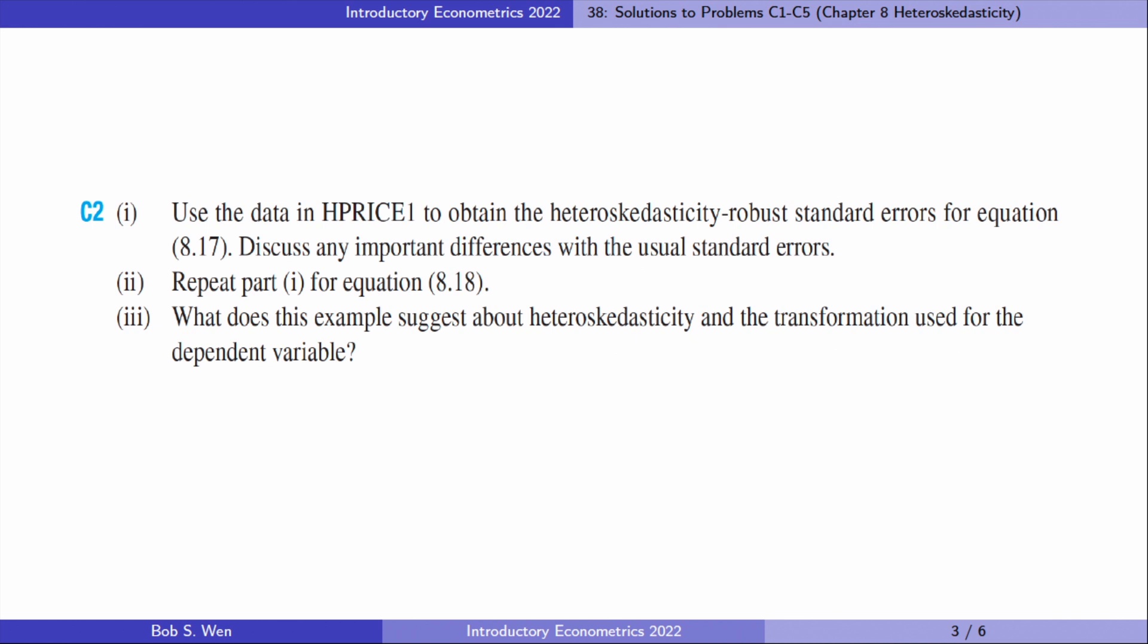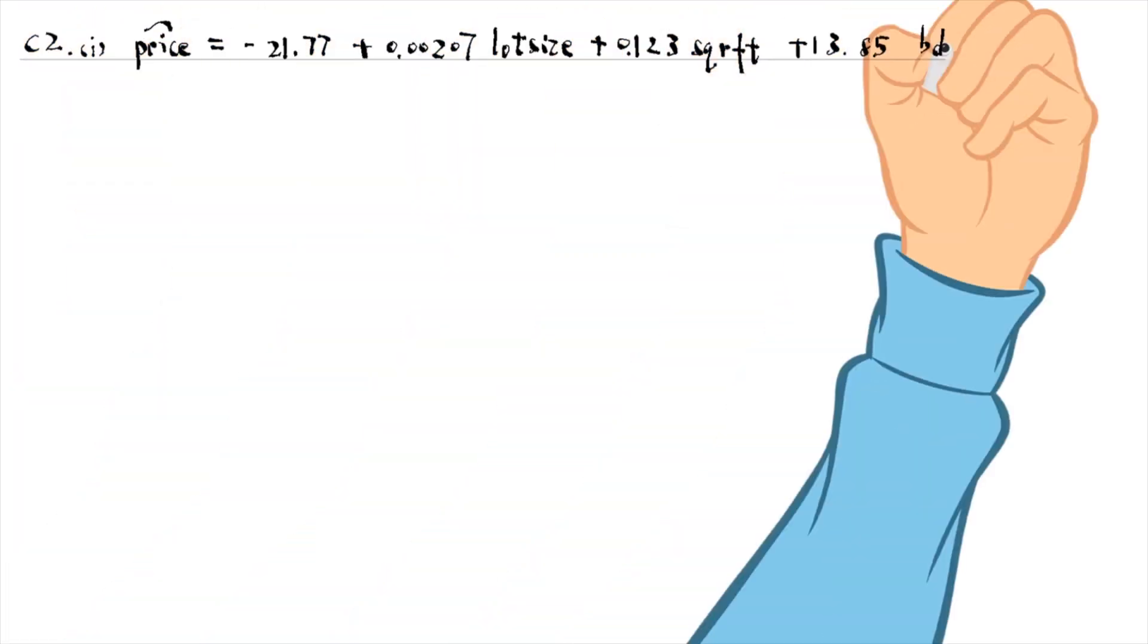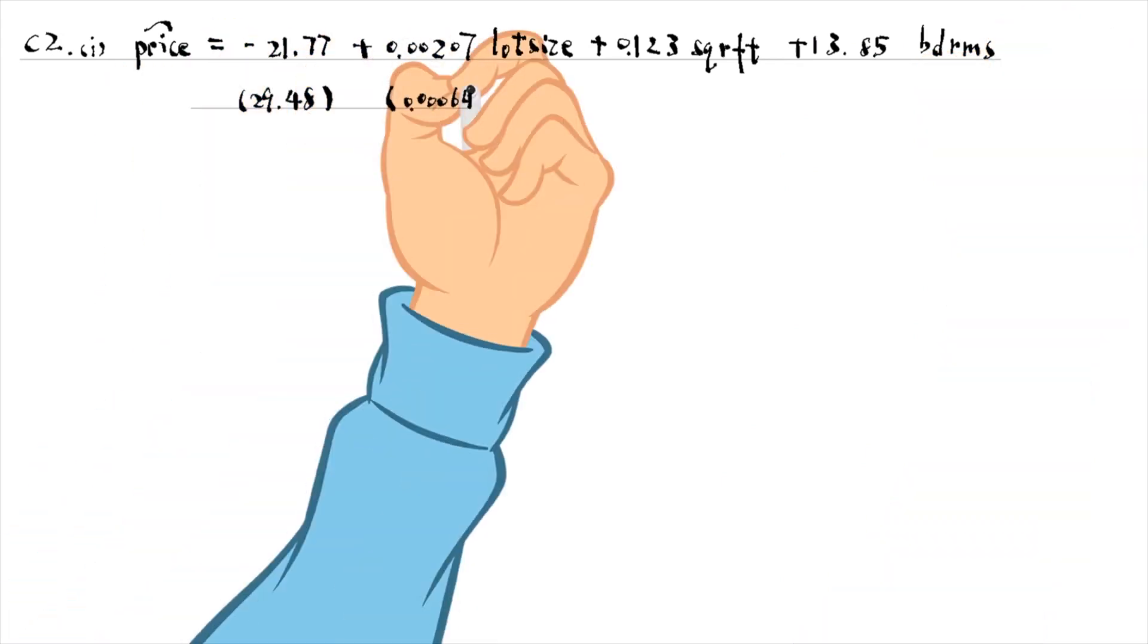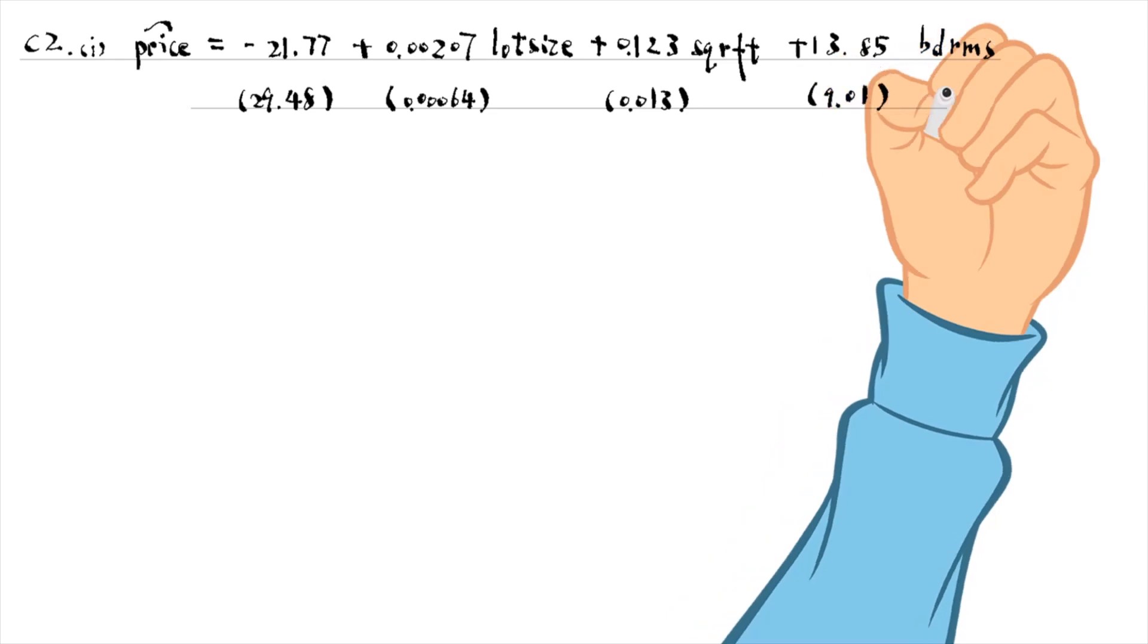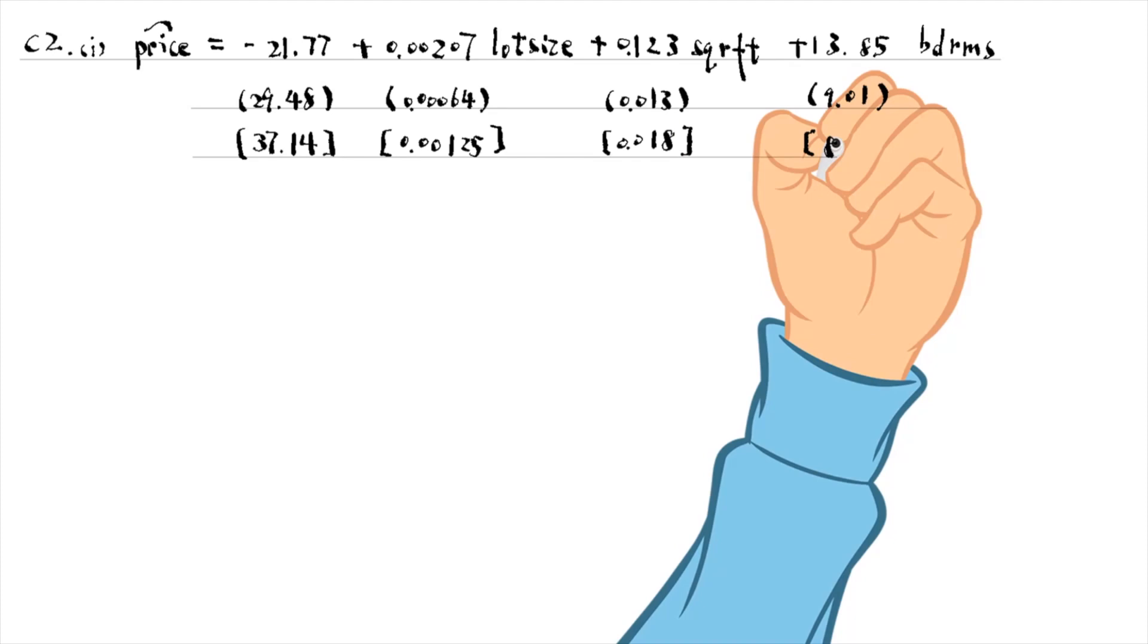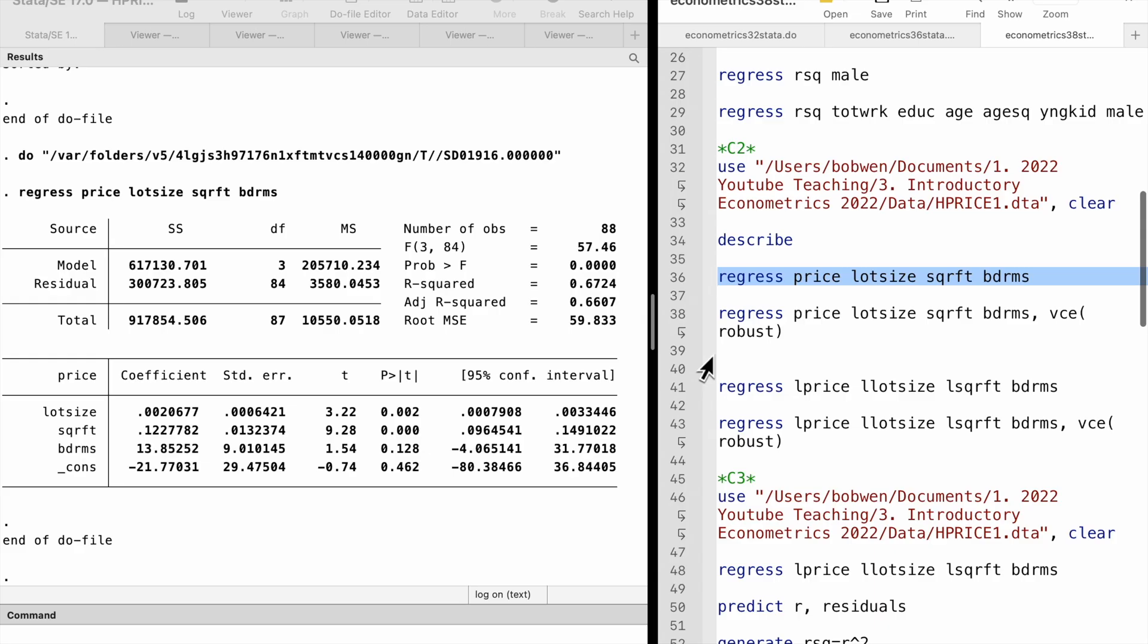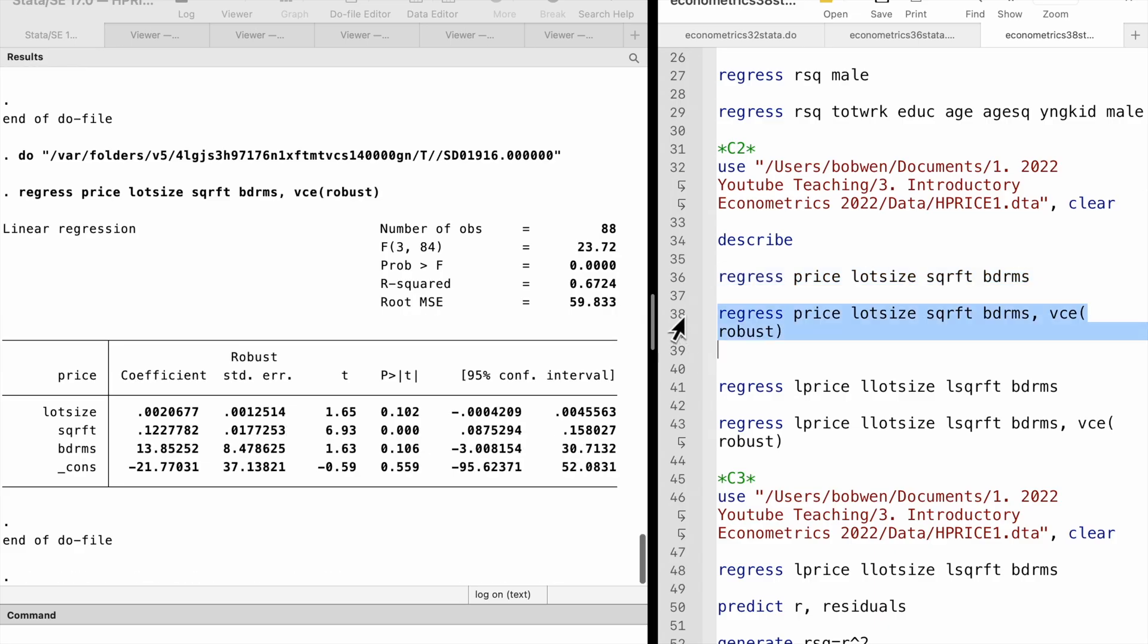Let's do computer exercise 2. The estimated equation is as follows. We report the usual standard errors in the parentheses and the heteroscedasticity robust standard errors in brackets. In Stata, we use the variance-covariance matrix option, VCE, to specify the robust standard error. We write robust inside the parentheses.